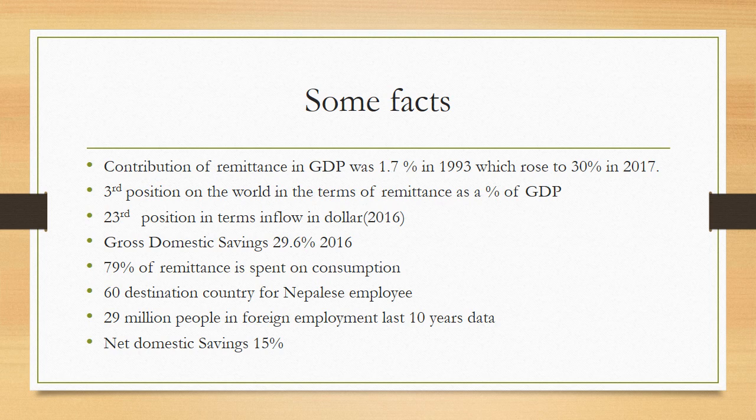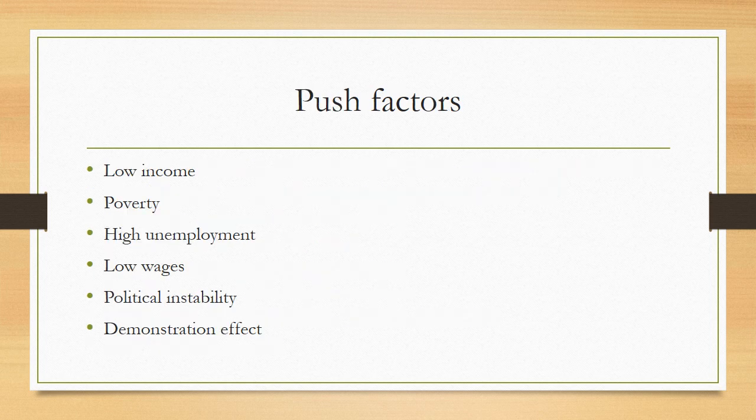79% of remittance in Nepal is spent on the consumption of goods. There are 60 various nations where Nepali people go for jobs, and 2.9 million people have been in foreign employment in the last 10 years. Domestic saving is now 15%, which is only possible due to remittance.